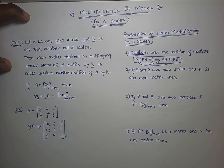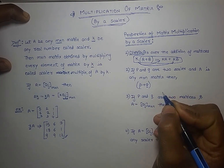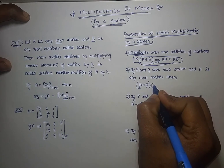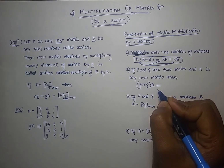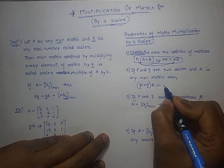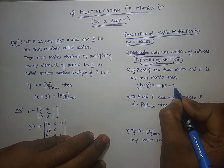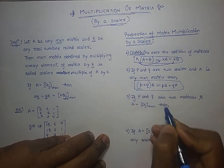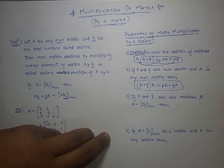The second property is: if p and q are two scalars and A is any m by n matrix, then (p+q)A = pA + qA. We can distribute A inside, multiplying separately to get pA and qA. This is another property of scalar matrix multiplication.